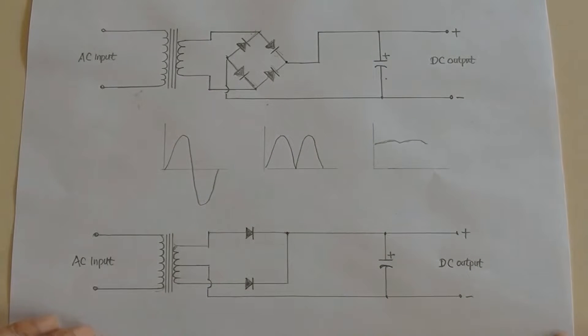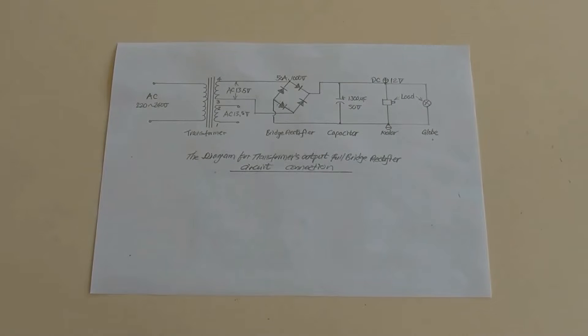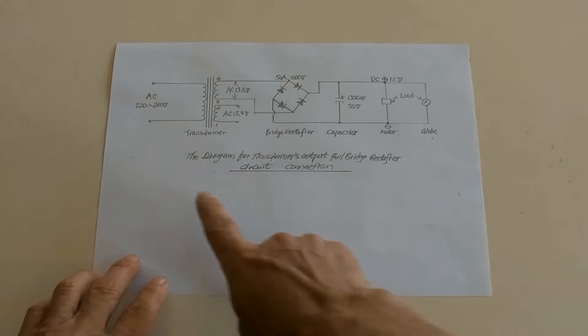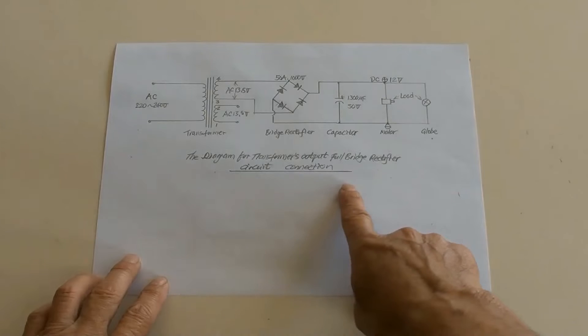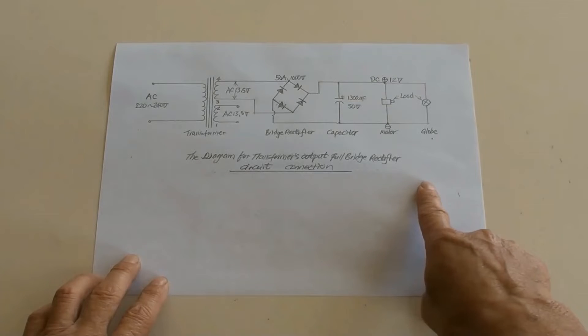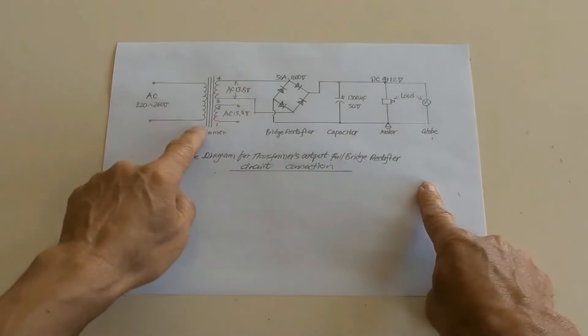That is how to make AC to DC by this way. This is a circuit diagram of AC to DC by using a transformer and bridge rectifier.